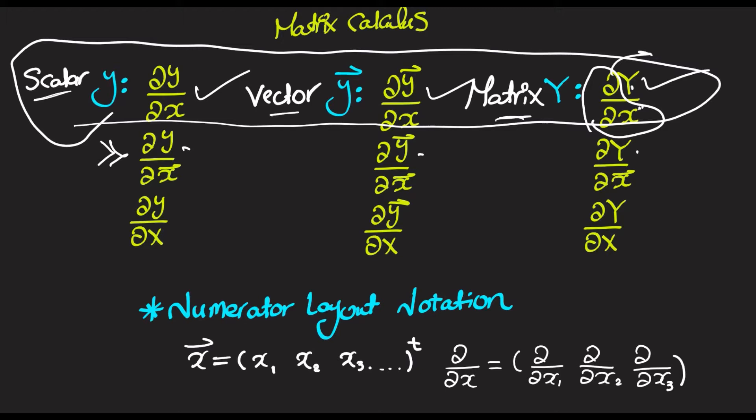Starting from here, I'll have to introduce something called the layout notation. When you're doing matrix differentiation, you have to follow one of two layout notations. The main difference is the layout — one is like the transpose of the other.